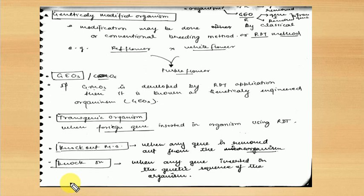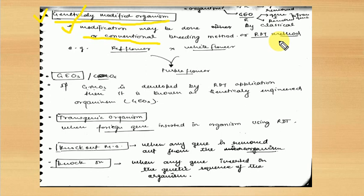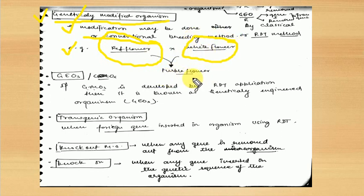These are some basic terminologies used in recombinant DNA technology. The first one is Genetically Modified Organism — GMO. Modifications may be done by the classical or conventional breeding method and recombinant DNA technology method. For example, if a red flower and a white flower are crossed, a purple flower is produced. That purple flower would be a genetically modified organism.